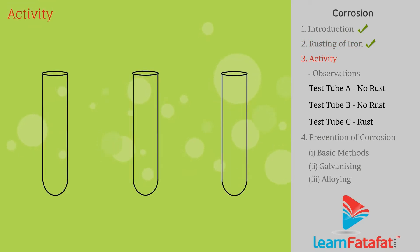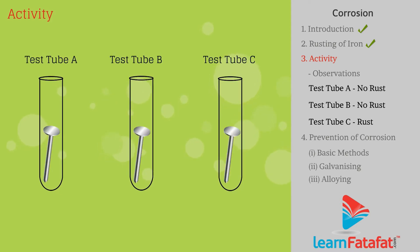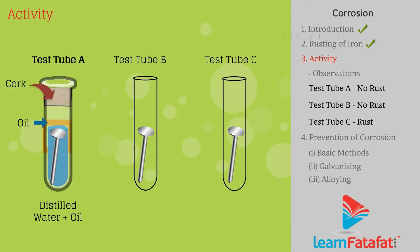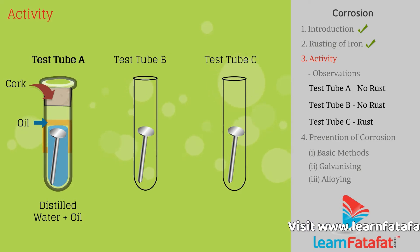Activity. Take 3 test tubes and label them as A, B, and C, and put some clean nails in all test tubes. Pour distilled water in test tube A and add some oil in it. Oil floats over water and prevents air from being dissolved into the water.